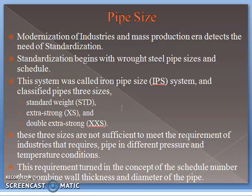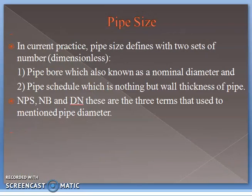These three sizes, after advancement in industries, are not sufficient to meet the requirements of industries that require pipe in different pressure and temperature operating conditions. This requirement introduced the concept of the schedule number, which combines wall thickness and diameter of the pipe.